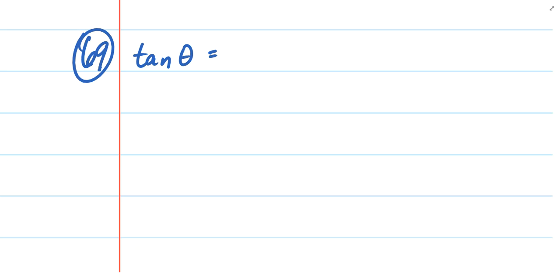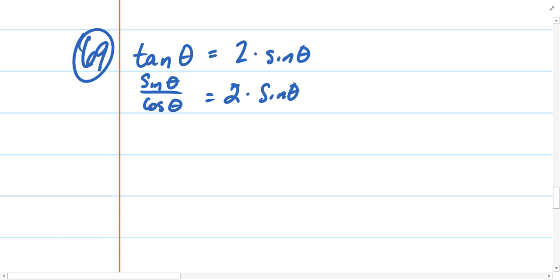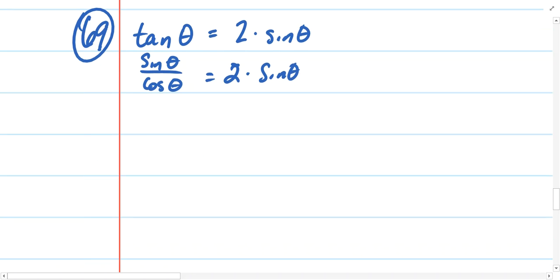So we've got tangent theta equals 2 times sine theta. And rather than graphing both sides of the equation and finding where they intersect, let's use some trig identities here. Well, tangent theta is the same as sine theta divided by cosine theta. That was one of our first identities that we memorized last week.